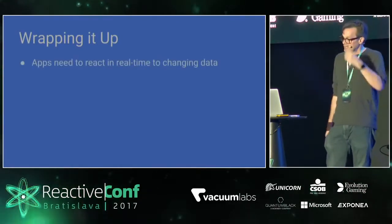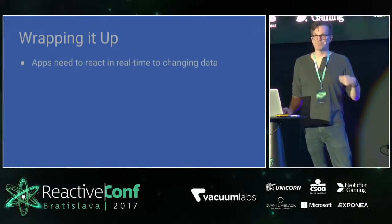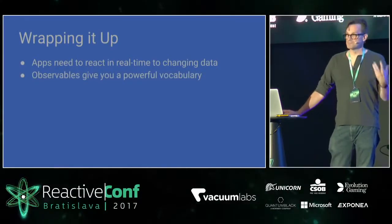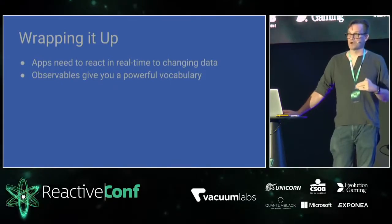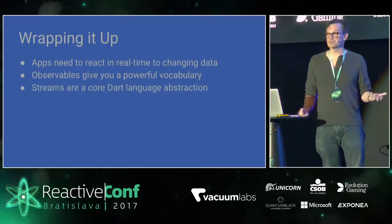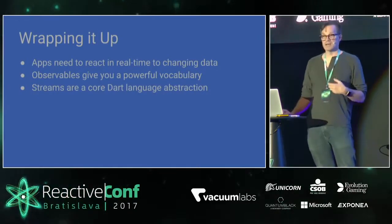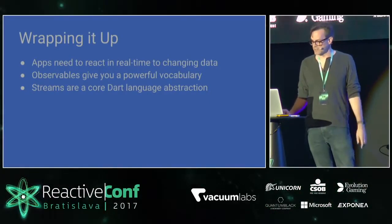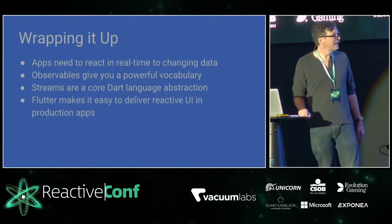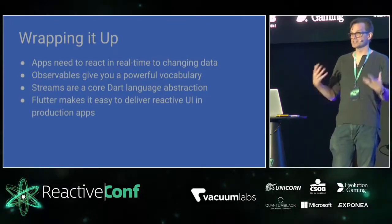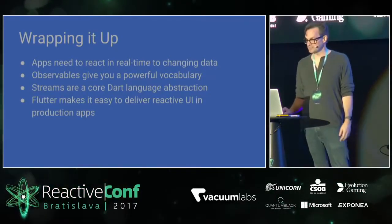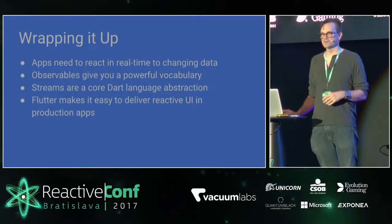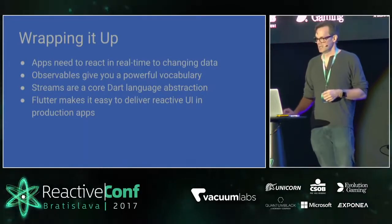To wrap up: you've seen how applications might want to respond to data that changes on some unpredictable schedule. You can use observables to get a powerful vocabulary for declaratively describing how you want to react to these things. You can use Dart Streams if you want a little more low-level power. You can hook it all into Flutter pretty trivially — Flutter is designed to work with data that's going to be changing rapidly. So you can take all of your reactive development expertise and start right away with Flutter. You don't have to reinvent your mental model of how this stuff works.